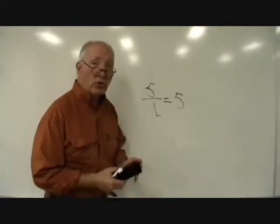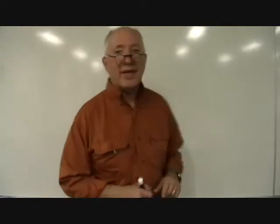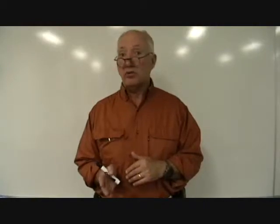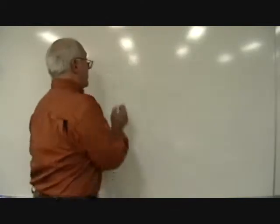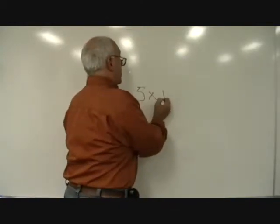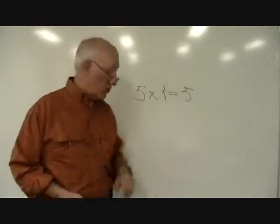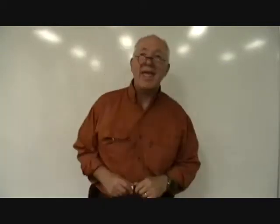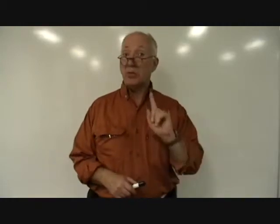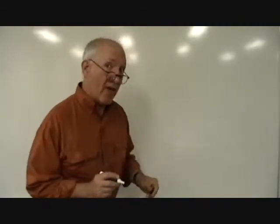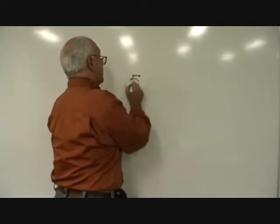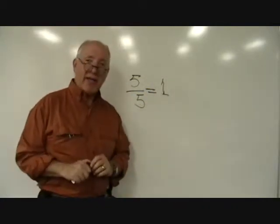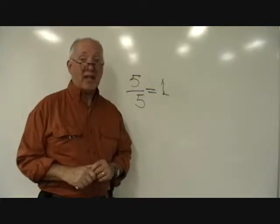Now let's look at rule number two. Rule number two is that anything multiplied times one equals itself. So let's look at that one again. If I take five times one, that equals five. Now let's take that five divided by five equals one. Anything divided by itself equals one. That is rule number three.